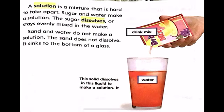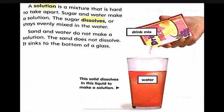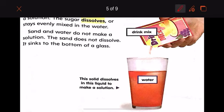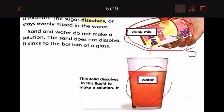So a solution is a mixture that is hard to take apart. Like this drink mix. This is drink mix. I think this is a powdered juice. But remember, this is not healthy, right? Because it contains lots of sugar and artificial colors. So this is drink mix. Drink mix is solid. What about the water? The water is liquid. What happened here? The solid dissolves in this liquid to make a solution. Alright? So the sugar dissolves or stays evenly mixed in the water.